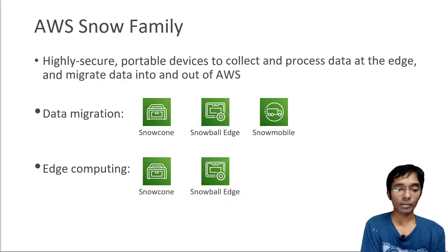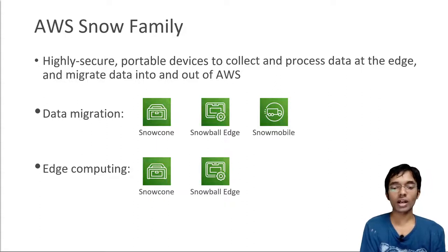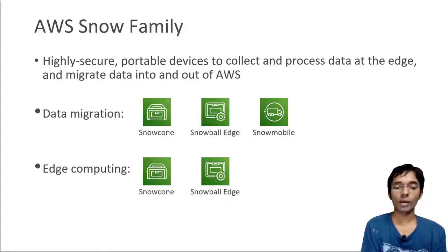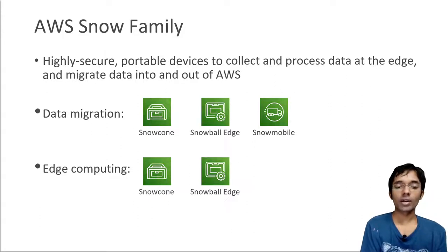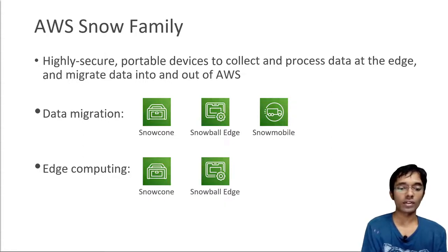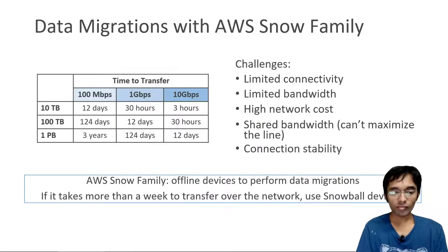Let's talk about the AWS Snow Family, which represents highly secure portable devices with two use cases within AWS: collecting and processing data at the edge, or migrating data in and out of AWS. For data migration we have three device types — Snow Cone, Snowball Edge, and Snowmobile. For edge computing we have Snow Cone and Snowball Edge.